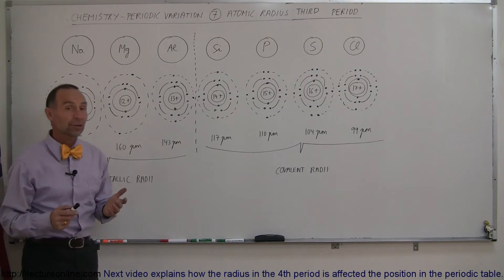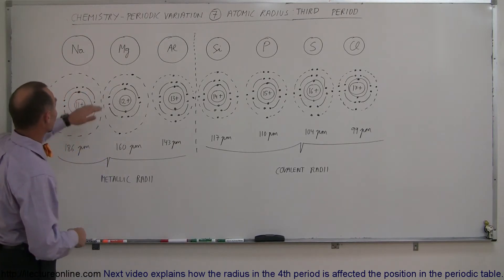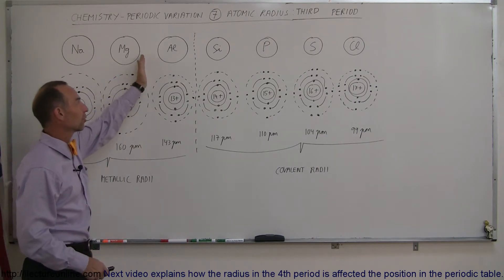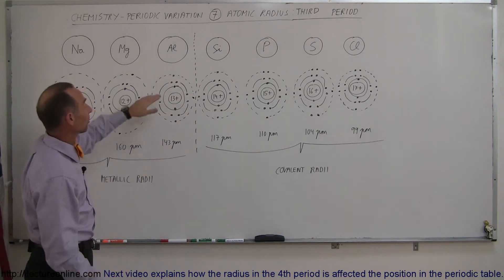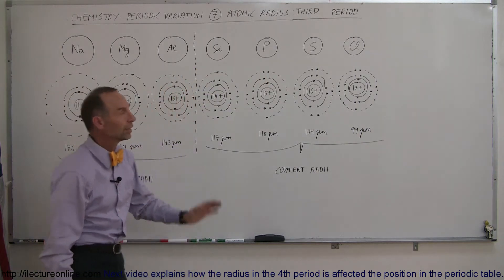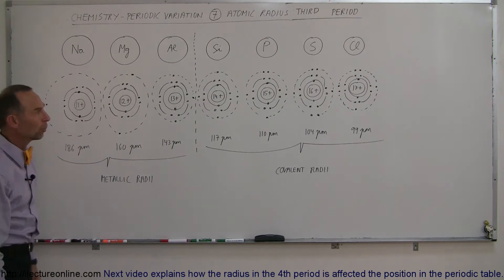Here we're now looking at the third period. On the left side of the periodic table we start with sodium, magnesium, then of course we have the transition elements and then on the right side we have the representative elements: aluminum, silicon, phosphorus, sulfur, and chlorine. Of course we're ignoring the noble gases.